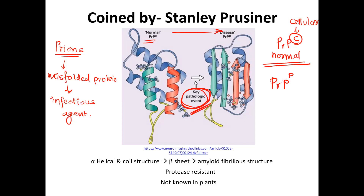This abnormal form is written as PrPSc, coming from the word scrapie. Scrapie represents the first known etiology of this disease. It was observed in sheep that they started to behave very differently and oddly, and from that they were able to isolate this protein which we denote as PrPSc — this is the abnormal form of the protein.